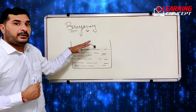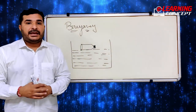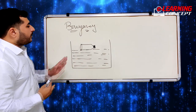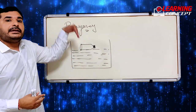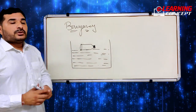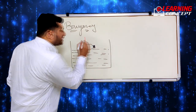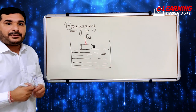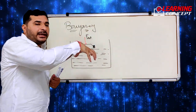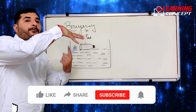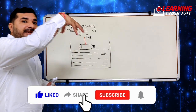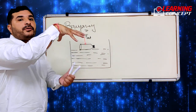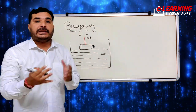Now the question arises: is Earth's gravitational force not acting on this bottle? Yes, Earth's gravitational force is acting. So why is it floating instead of going downward? Let's observe further — apply external force and push the bottle into the water. As you push it deeper, you feel an upward force on your hand, and as you push it deeper and deeper, that upward force keeps increasing.